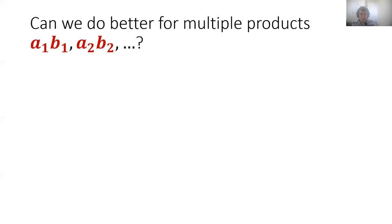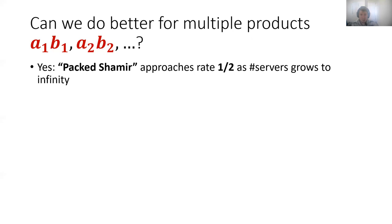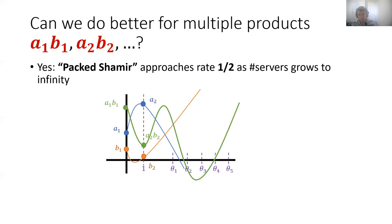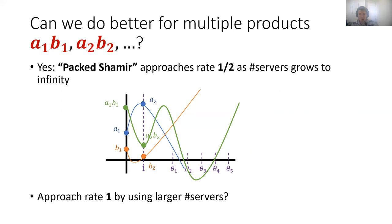This begs the question: can we do better if we want to perform multiple products — A1 times B1, A2 times B2, and so forth? The answer is yes. We can do that with the so-called packed Shamir scheme, which approaches rate one half as the number of servers goes to infinity. Each client chooses a random parabola passing at two points corresponding to the client's inputs, and the product of these two parabolas is a degree-four polynomial, so we need five servers to recover these products. But this only approaches rate one half, and the question remains whether we can approach rate one as the number of servers increases.